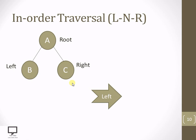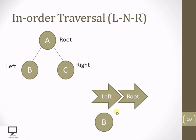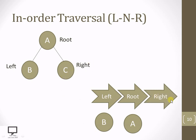So what we are supposed to do whenever we want to traverse this tree in in-order: we start with the left. We start with the root itself and check whether the root is having a left child. Yes, it is having a left child, then process it. So this is the left — then move back to the root again. And now I am supposed to process root node A.